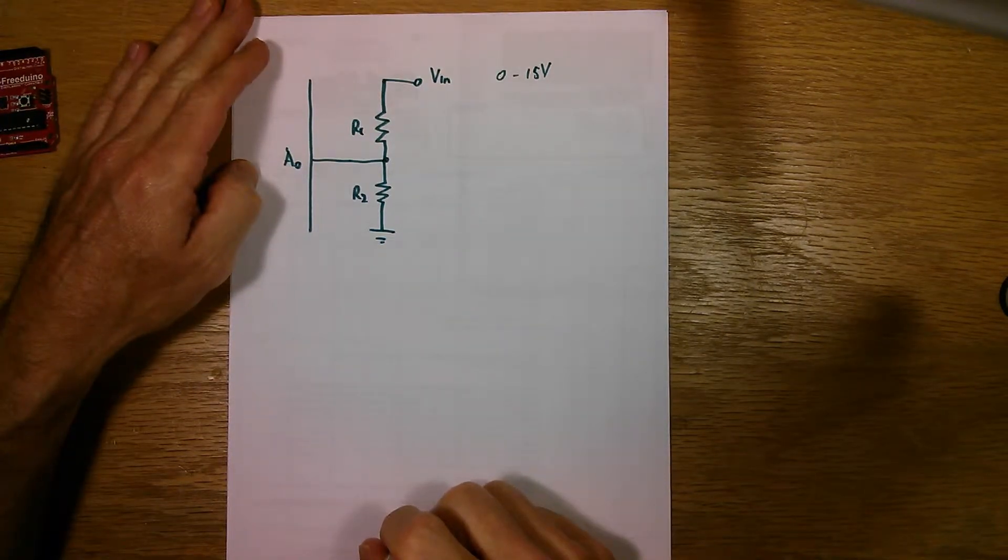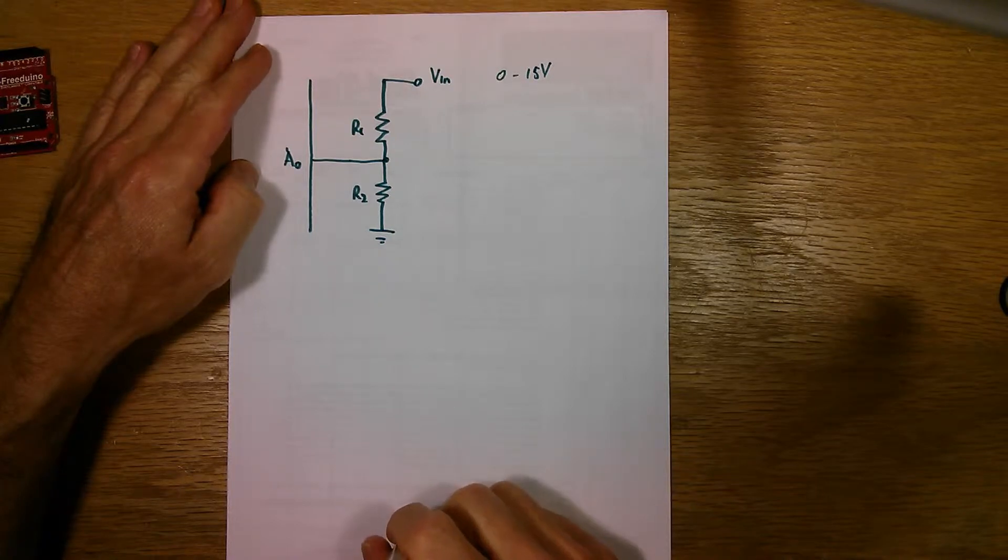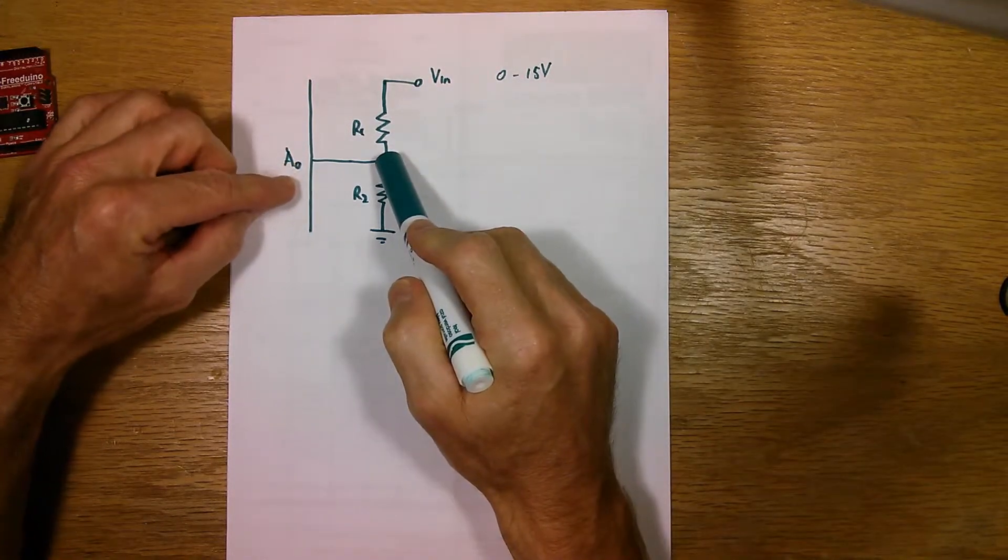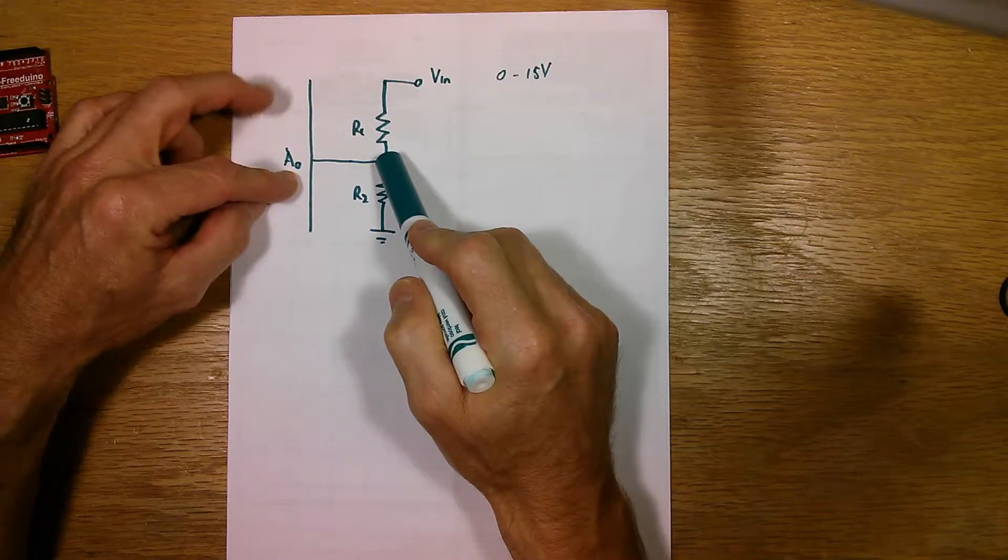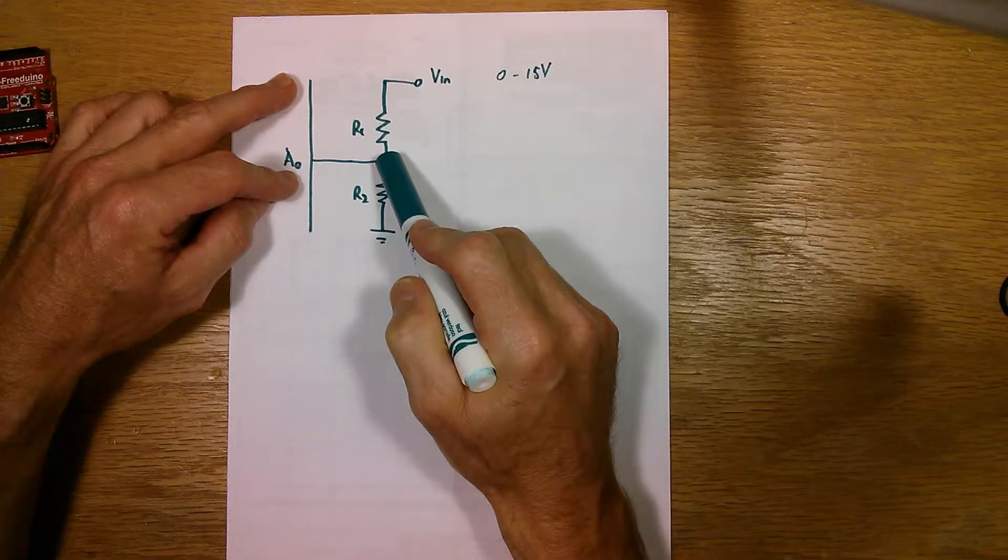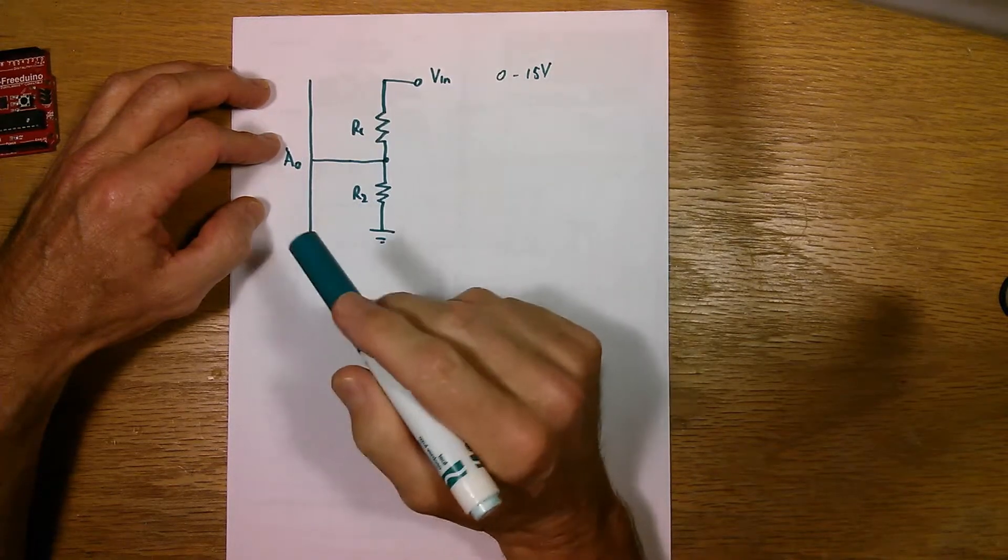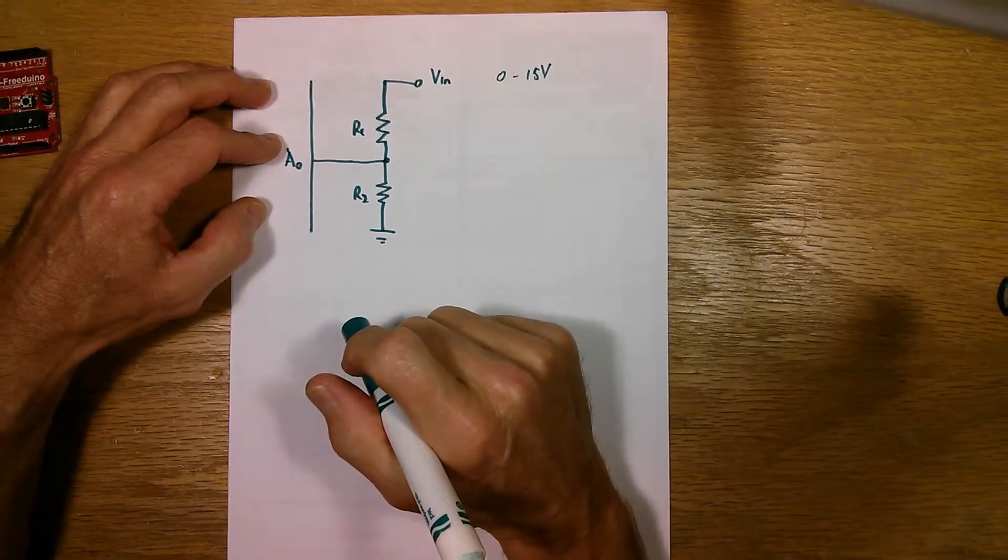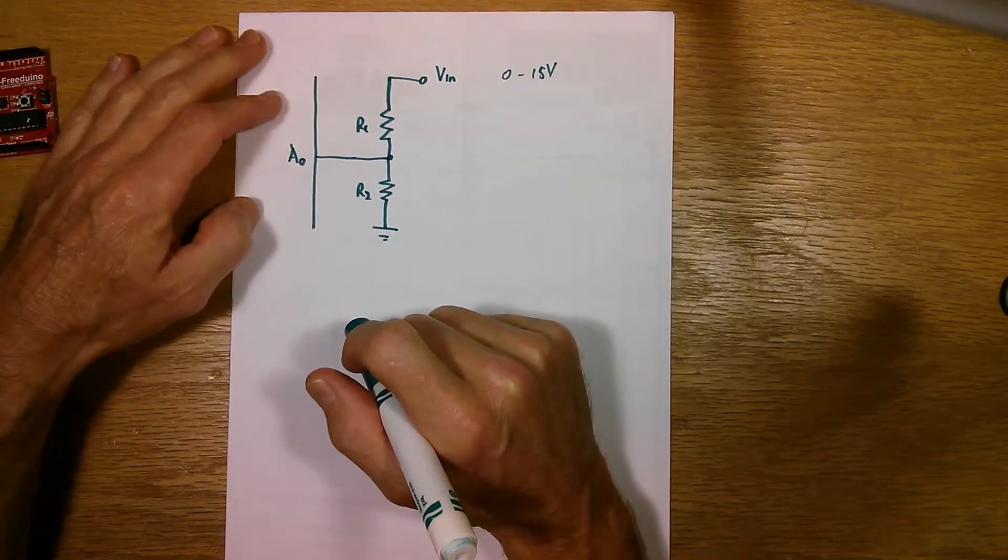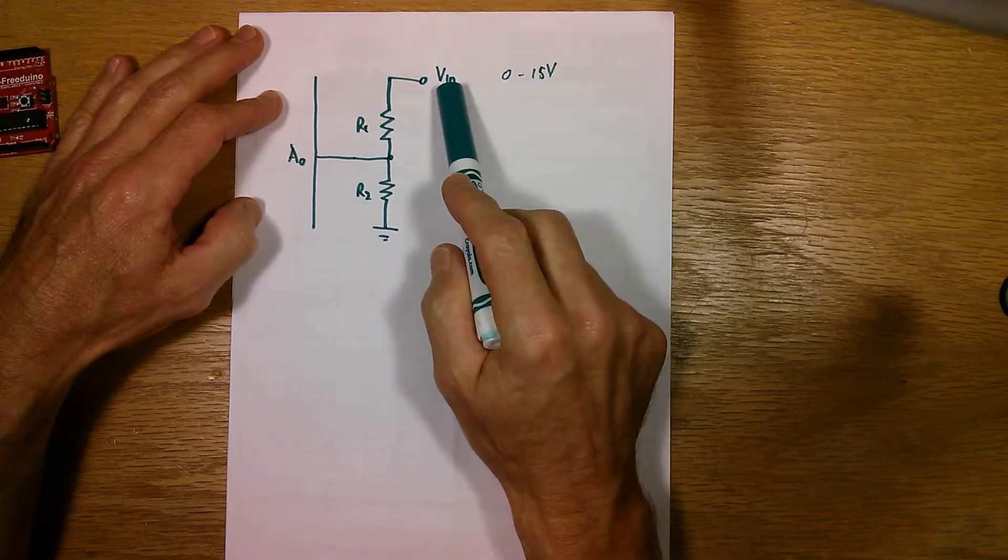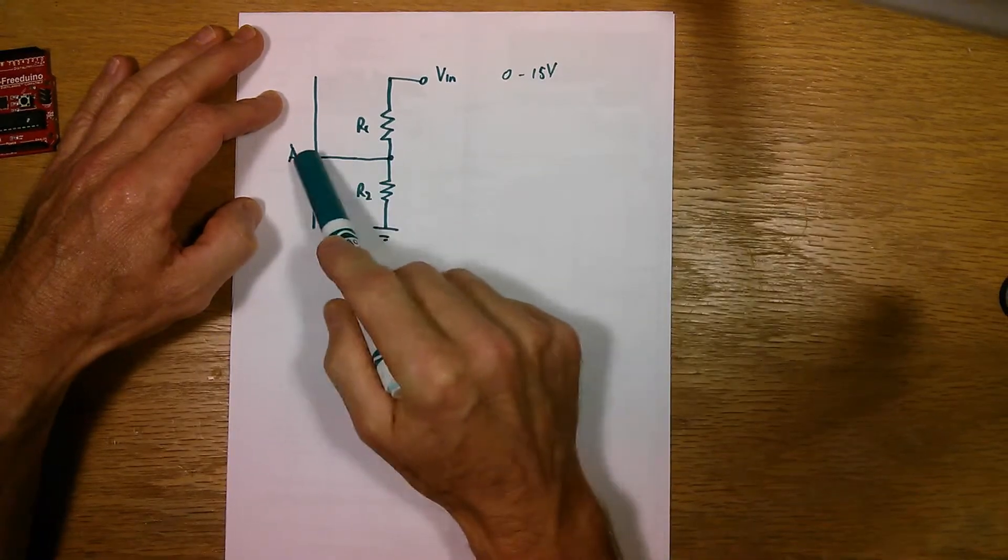Now, for this digital voltmeter that we're going to make, and I mentioned it earlier in one of my earlier tutorials, I decided that it was going to read a range of zero to 15 volts. Now, you can't put 15 volts directly into the analog input pin because the 15 volts is greater than the five volt reference of the analog to digital converter. That would also damage the microcontroller.